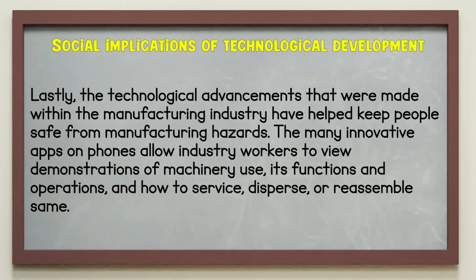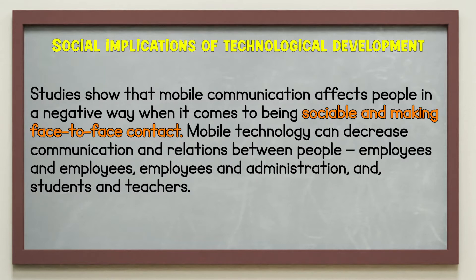Lastly, the technological advancements made within the manufacturing industry have helped keep people safe from manufacturing hazards. The many innovative apps on phones allow industry workers to view demonstrations of machinery use, its functions and operations, and how to service, disperse, or reassemble safely. Studies show that mobile communication affects people in a negative way when it comes to being sociable and making face-to-face contact. Mobile technology can decrease communication and relations between people — employees and employees, employees and administration.